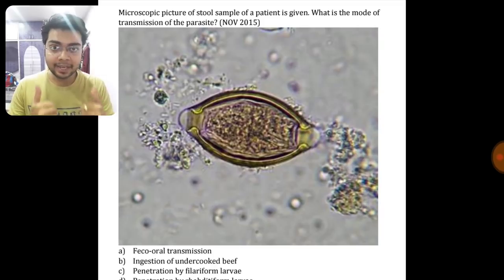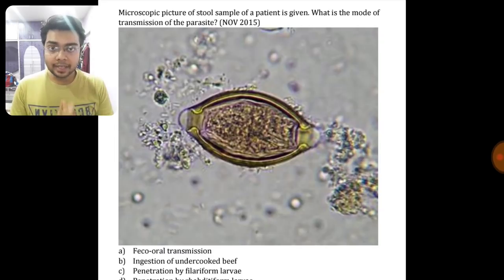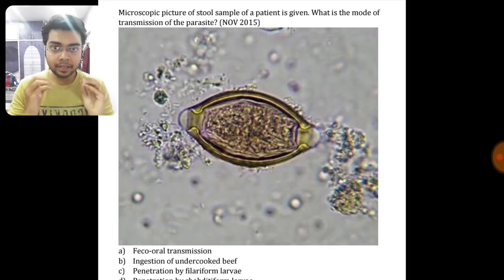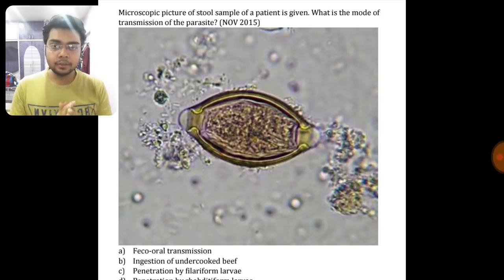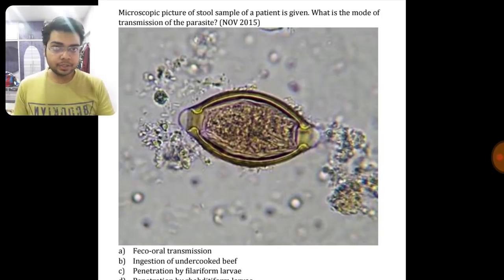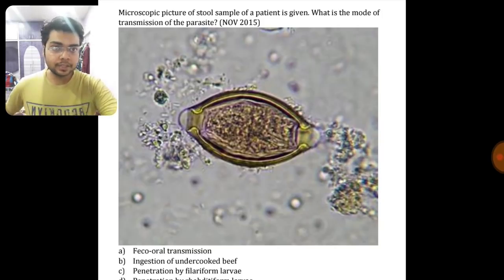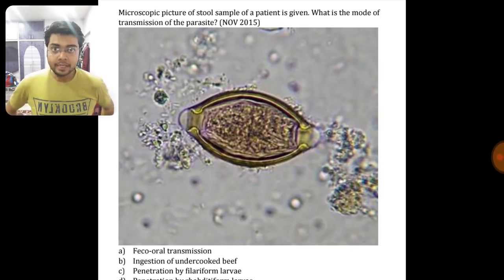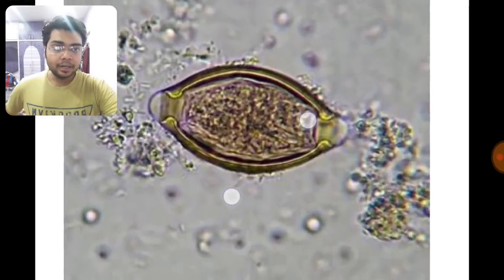AIIMS is like any other exam — you need not to take much pressure, you will do it. Here we are going to discuss some high-demand eggs and cysts of helminths and parasites, because they are asking repeatedly in your AIIMS exam to identify these eggs and to answer based on these cysts and eggs. This question, if you see, will not waste much time. The microscopic picture of a stool examination is given and they are asking: what is the mode of transmission of this parasite? This you can only answer if you identify the egg.